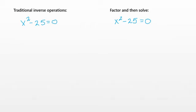Prior to this unit, we only knew how to solve algebraic equations by using inverse operations and the properties of equality — applying those inverse operations to both sides, isolating the variable, and then getting the solution. In the last couple of lessons, we have been learning how to factor algebraic expressions.